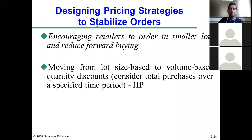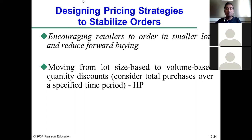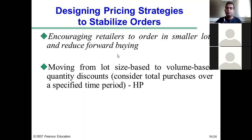The next managerial lever is designing pricing strategies to stabilize orders. This helps companies overcome pricing obstacles — the bullwhip effect created due to the company's pricing policies. We learned how pricing policies of a firm can result in the bullwhip effect. One approach is encouraging retailers to order in smaller lots and reducing forward buying. Generally, retailers order in larger quantities to avail quantity discounts.